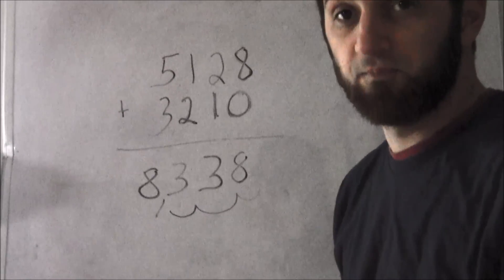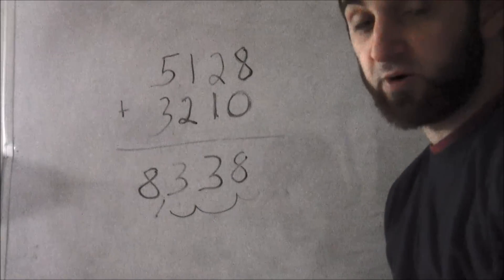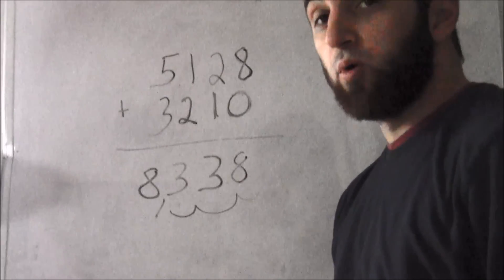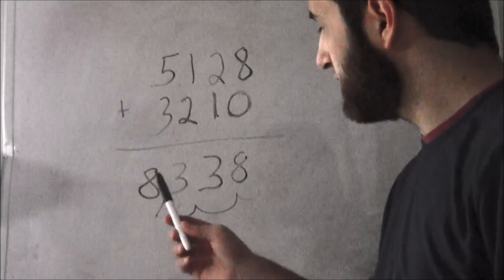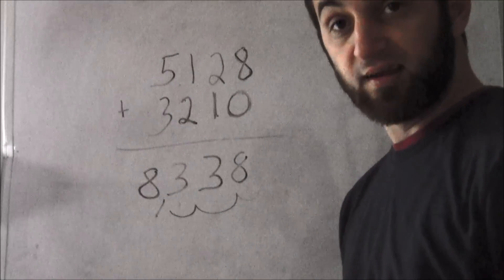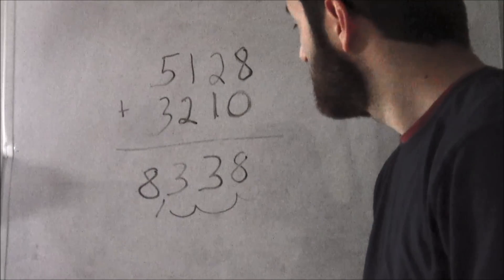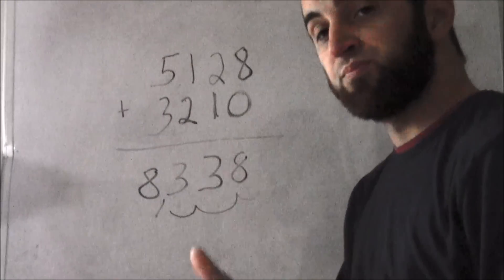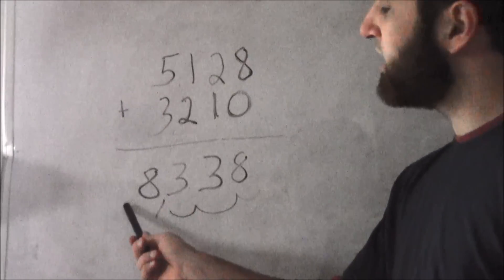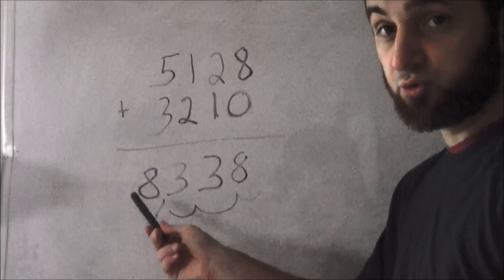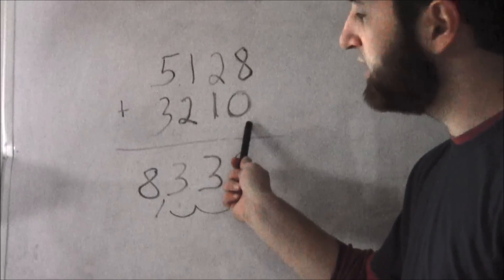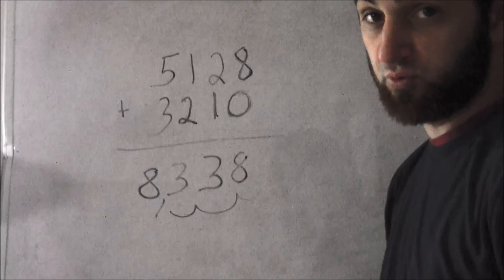Put your comma — so eight thousand three hundred and thirty eight. The answer is eight thousand three hundred thirty eight. I don't have access to a calculator, so I want to see if that's correct. Take eight thousand three hundred thirty eight, subtract three thousand two hundred ten, and it should give you five thousand one hundred twenty eight.